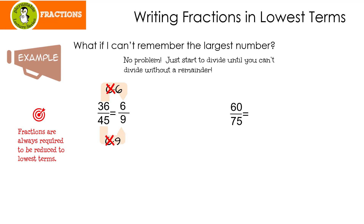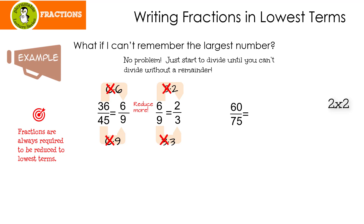When I look at 6 and 9, I have to think about this for a second. I know that 6 is 3 times 2. Does 3 go into 9? It sure does — 3 times 3. Once again, I'm going to cancel my common factors. So I end up with 2 over 3. Now when I look at this, the only factors for 2 are 2 times 1, and the only factors for 3 are 3 times 1. Since 1 is the only common factor, we did it. 36 over 45 reduces to 2 thirds.